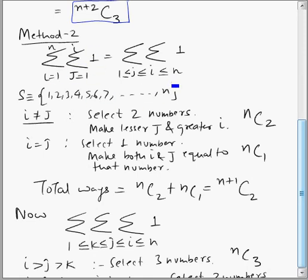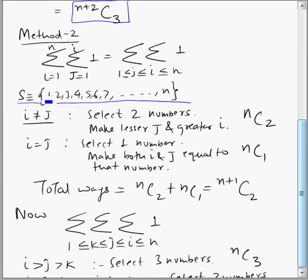This double sigma can be rewritten with the two sigmas connected, since the values of i and j are related. Here j varies from 1 to i, bounded by i, and i varies from 1 to n. So i takes values from 1 to n, but j has an upper limit of i. To understand this, we assume a set of the first n natural numbers, and we make two cases: i not equal to j, and i equal to j.